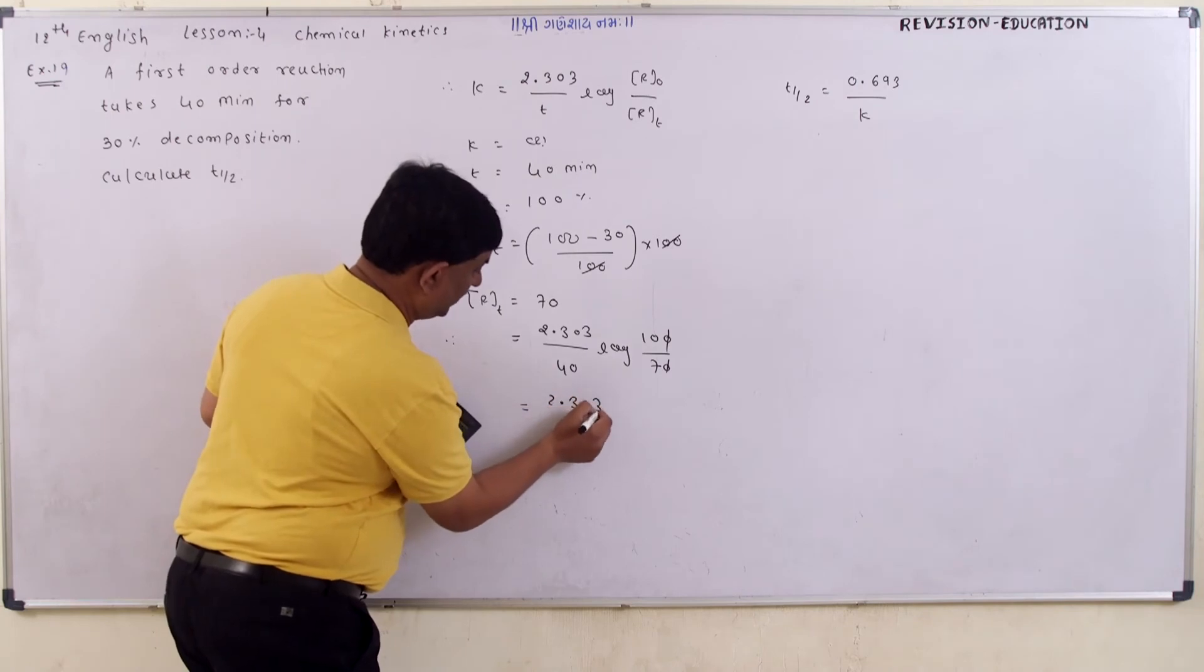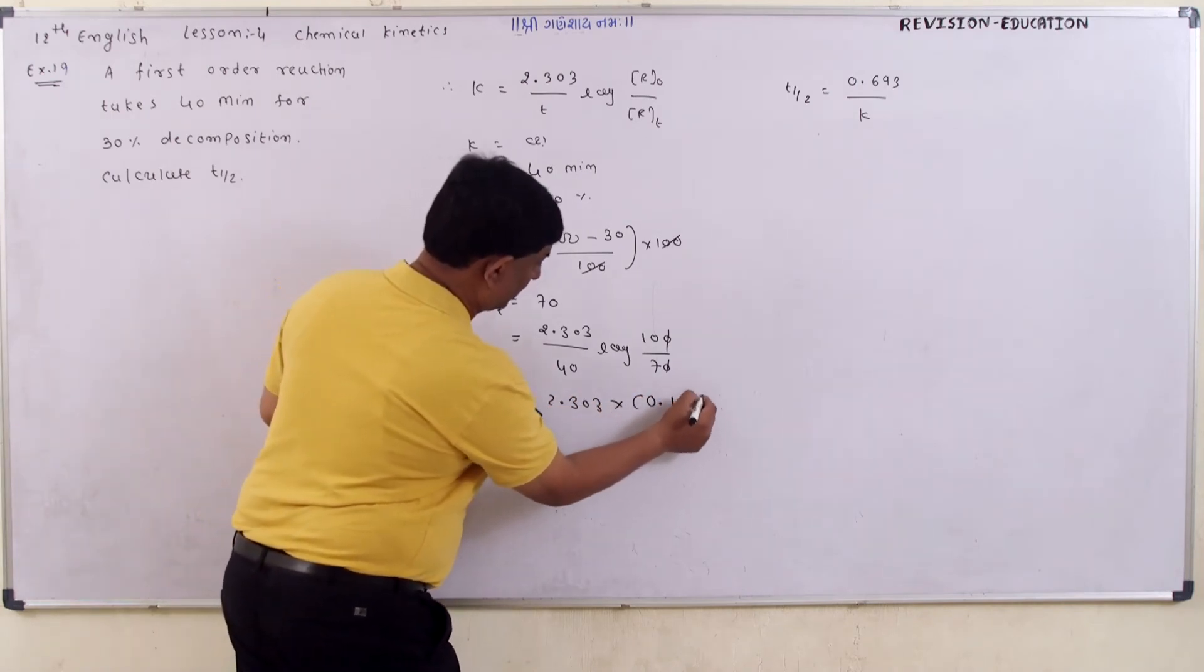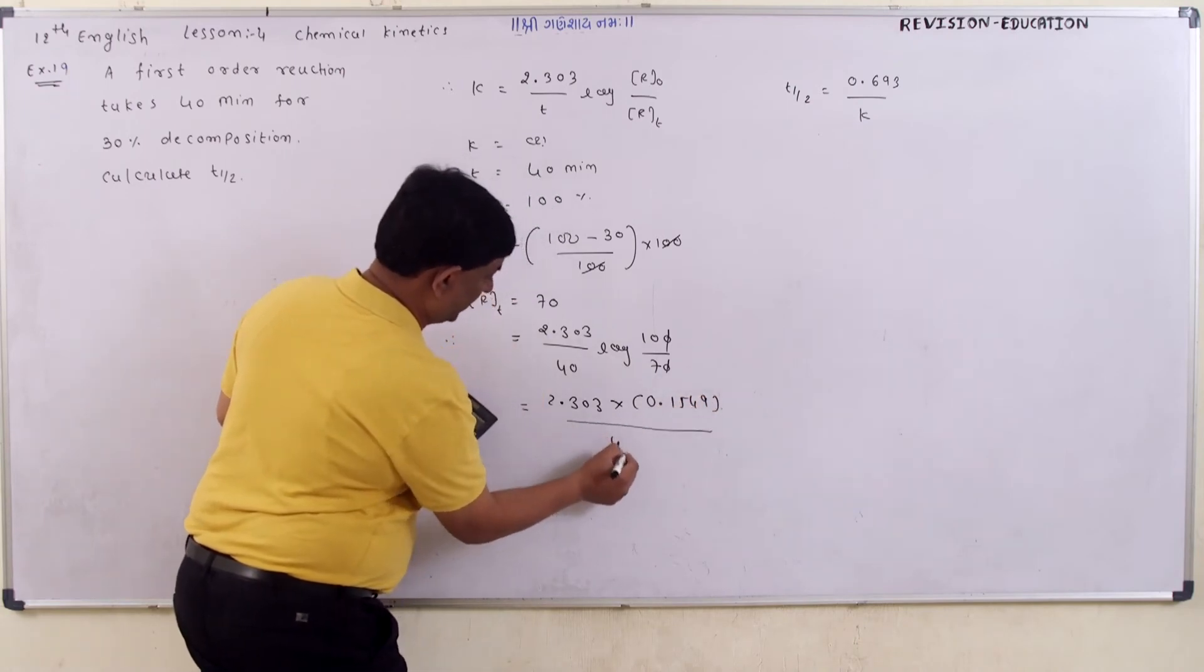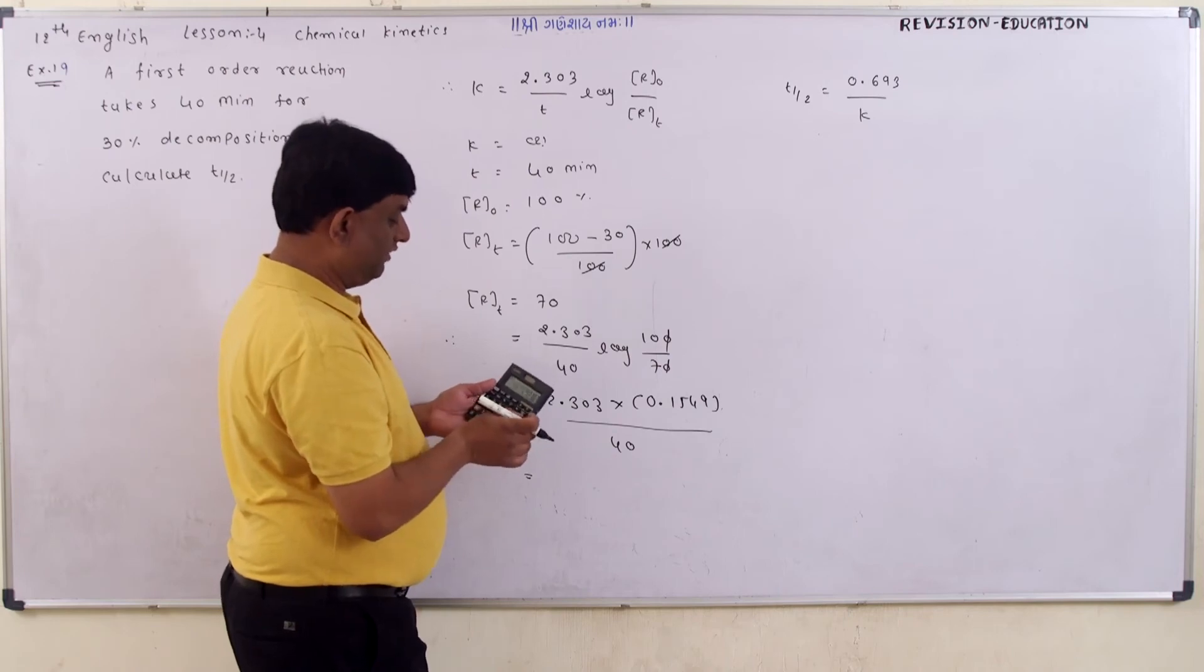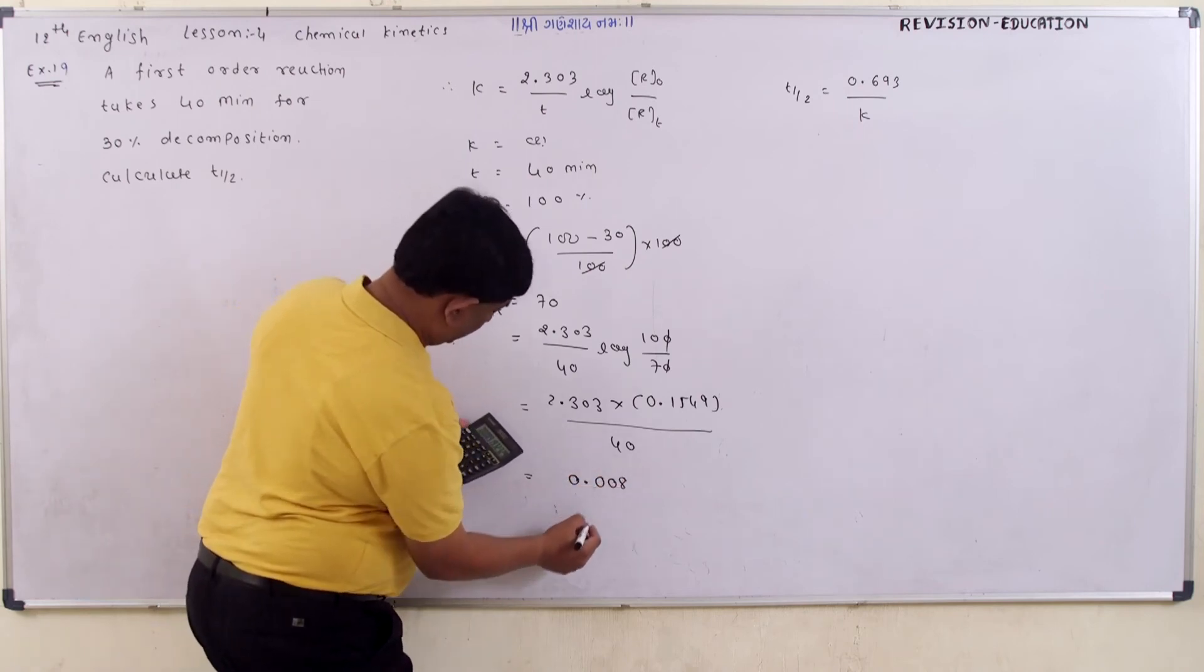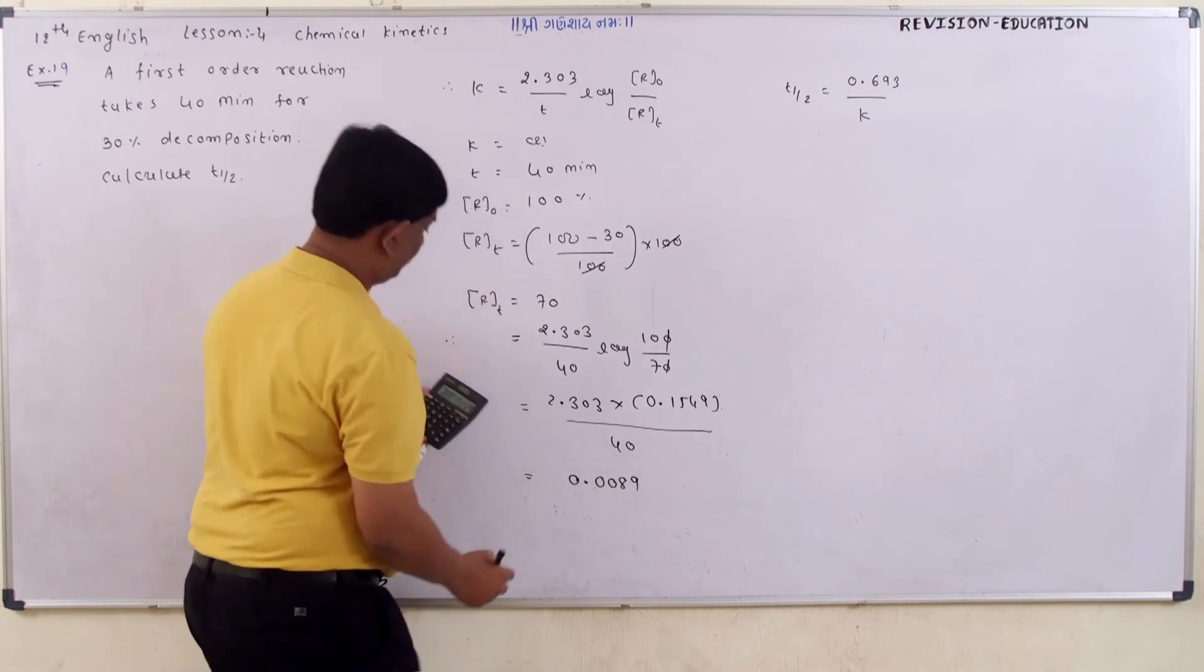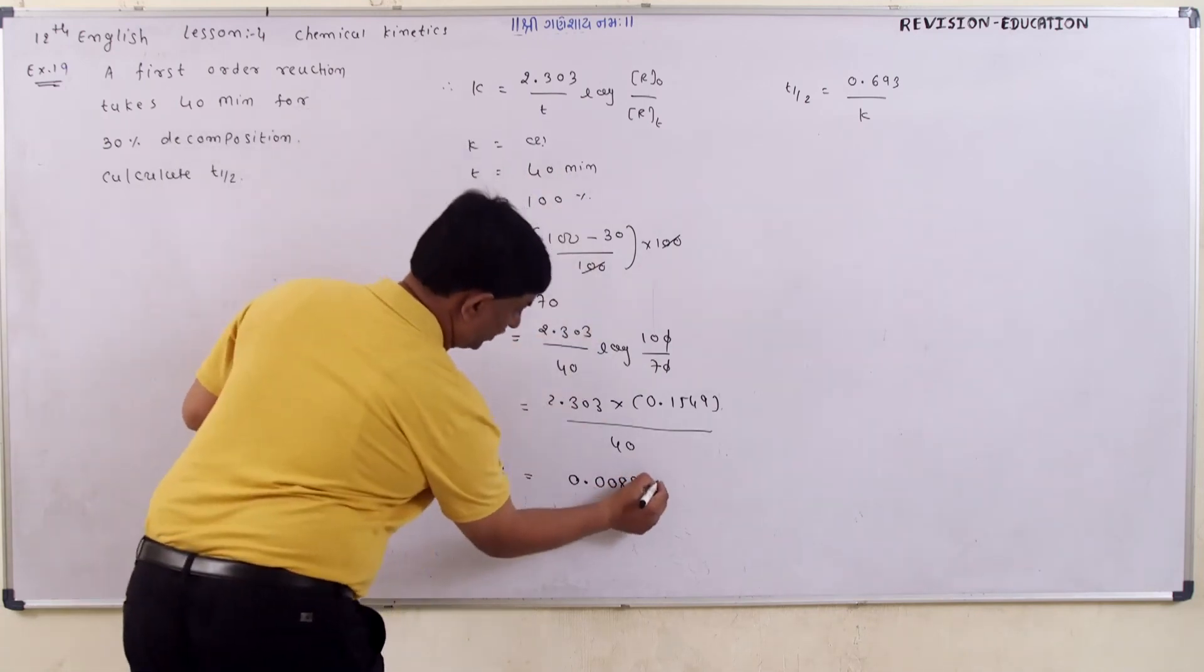This gives us 2.303 divided by 40 times 0.1549. After multiplication, 2.303 divided by 40, the answer is 0.0089. This is our k value.